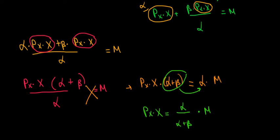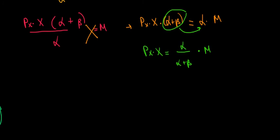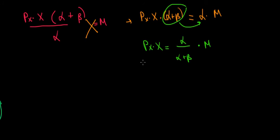Let's give some interpretation for this now. What do we see here? We see that price of x times x, that is the money that we spent, money spent for x. And what is alpha divided by alpha plus beta? That's the share of money, the share of income that we spent on x. So this is our share.